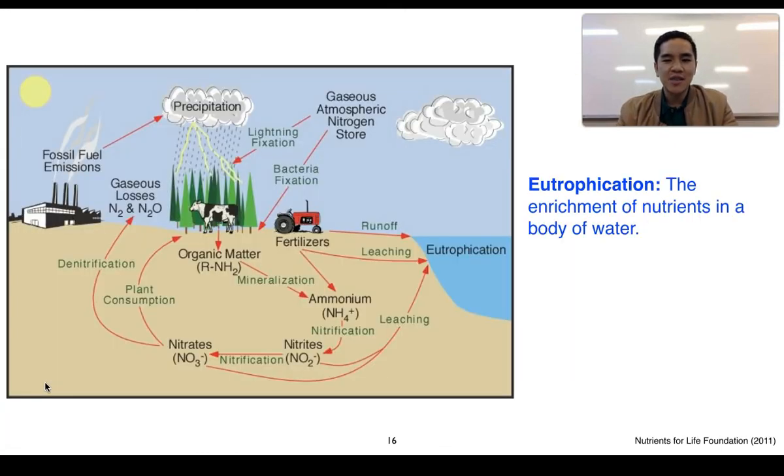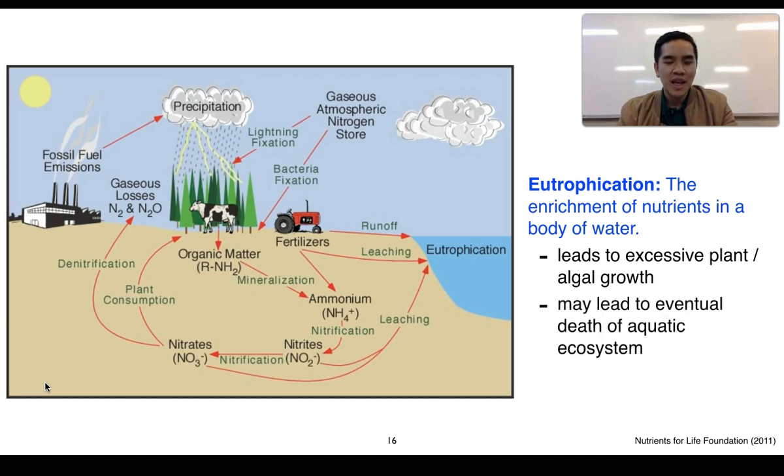Eutrophication is the enrichment of nutrients in a body of water. The issue with this is that it can lead to excessive plant as well as algal growth, and this can lead to the eventual death of an aquatic ecosystem.